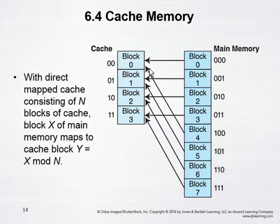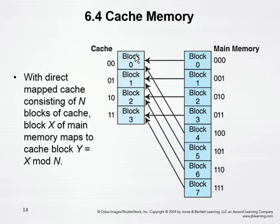For example, block zero will match up with block zero in our cache memory, and one goes to one, and two goes to two, and three maps to three, and then we repeat. So if we need to get things from block four in main memory, that would then be placed in block zero. That means that what was in block zero in cache memory would have to be evicted and sent back to main memory, or released from cache at least, so that block four could come in.